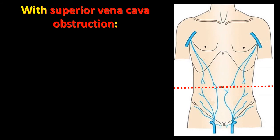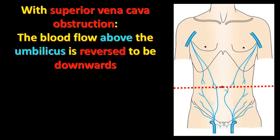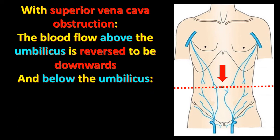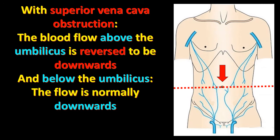With superior vena cava obstruction, the blood flow above the umbilicus is reversed to flow from upward downward — a reverse, abnormal direction. Below the umbilicus, the flow remains normally downward.